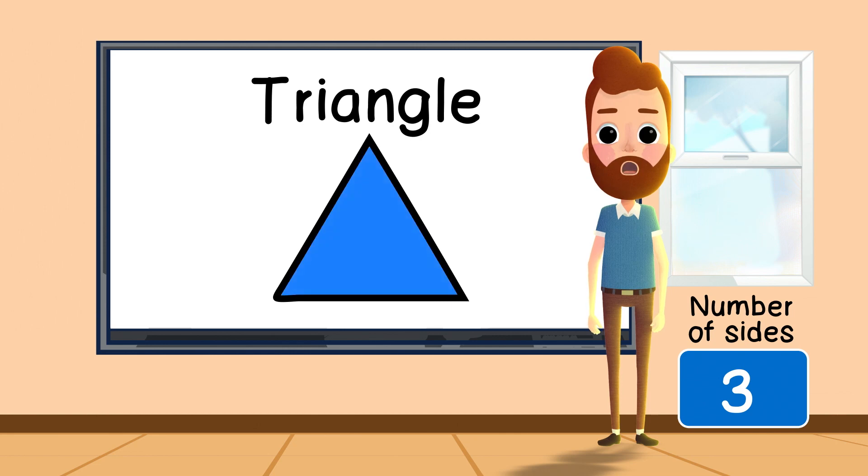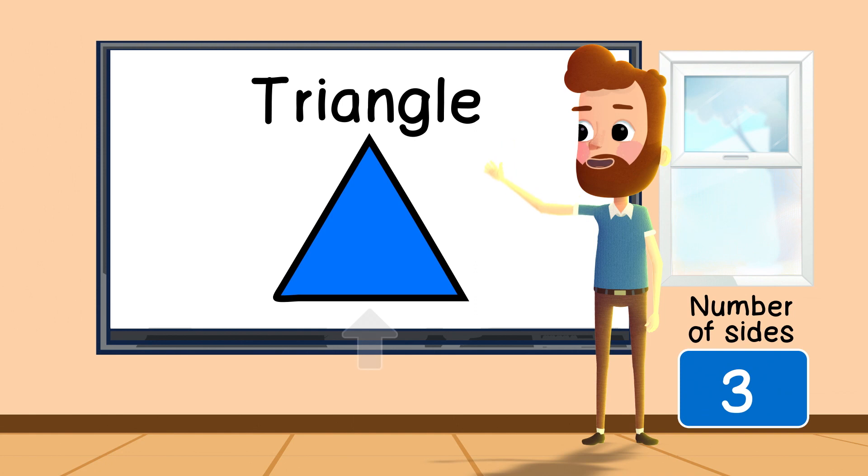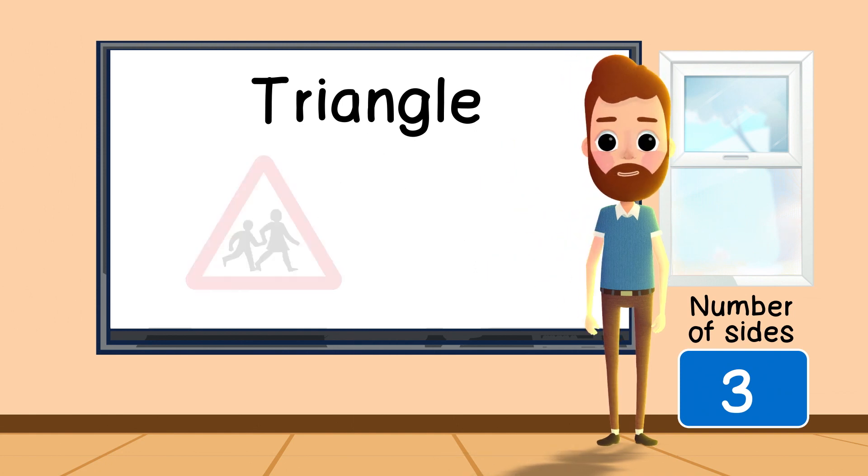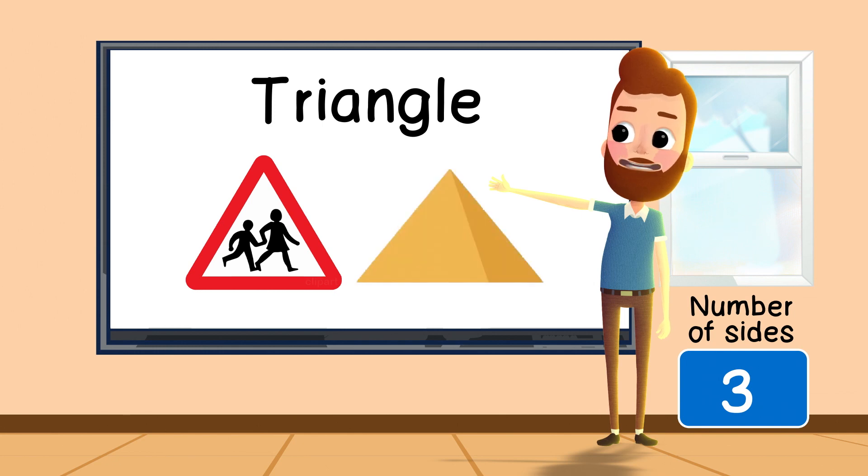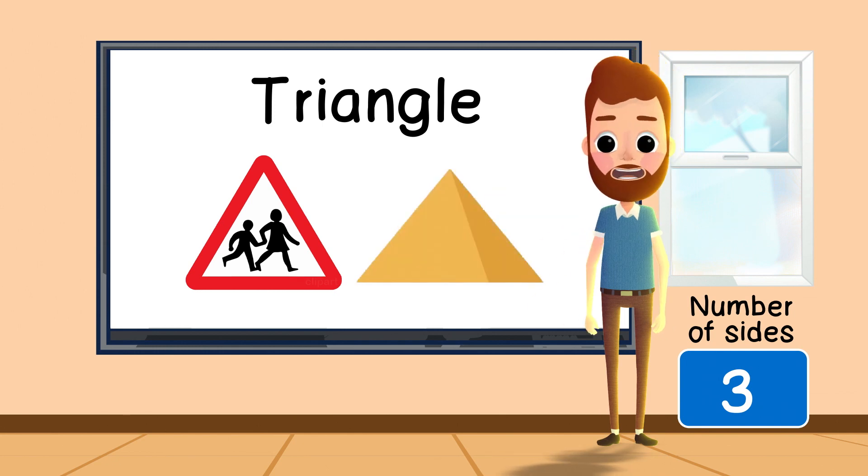A triangle is a three-sided shape. Side one, side two, and side three. Road signs and pyramids are great examples of objects that are triangles.